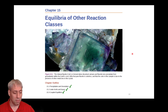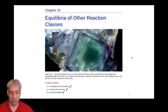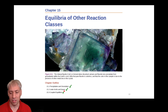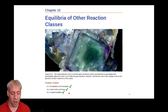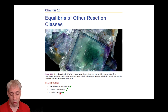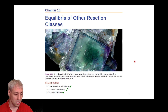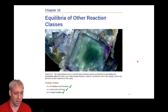That closes out Chapter 15. We talked about precipitation and dissolution in terms of Ksp values and solubility constants, Lewis acids and bases forming and dissociating complex ions, electron donors and acceptors, and then combined everything we know about equilibria to make these coupled equilibria — where one equilibrium impacting another affects others simultaneously. Next we'll dive into Chapter 16.